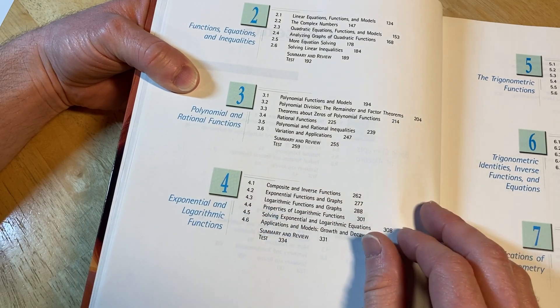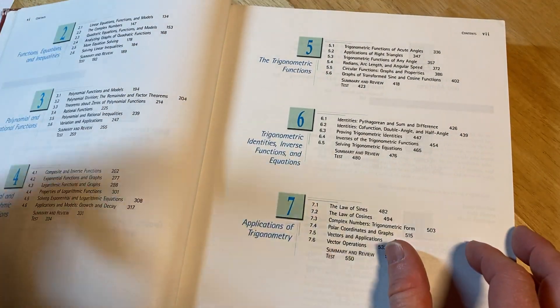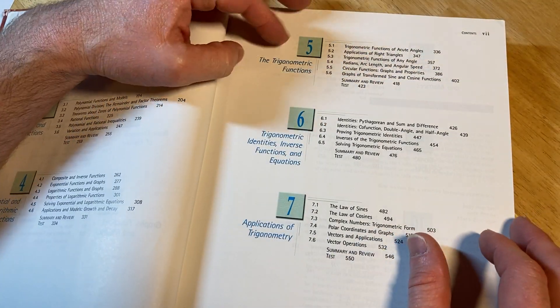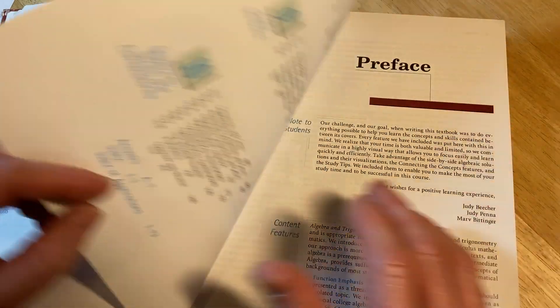Polynomials. Exponential and logarithmic functions. So these first four chapters would be pre-calc or maybe some algebra. And then trig would start here. Five, six, and seven would be trig.